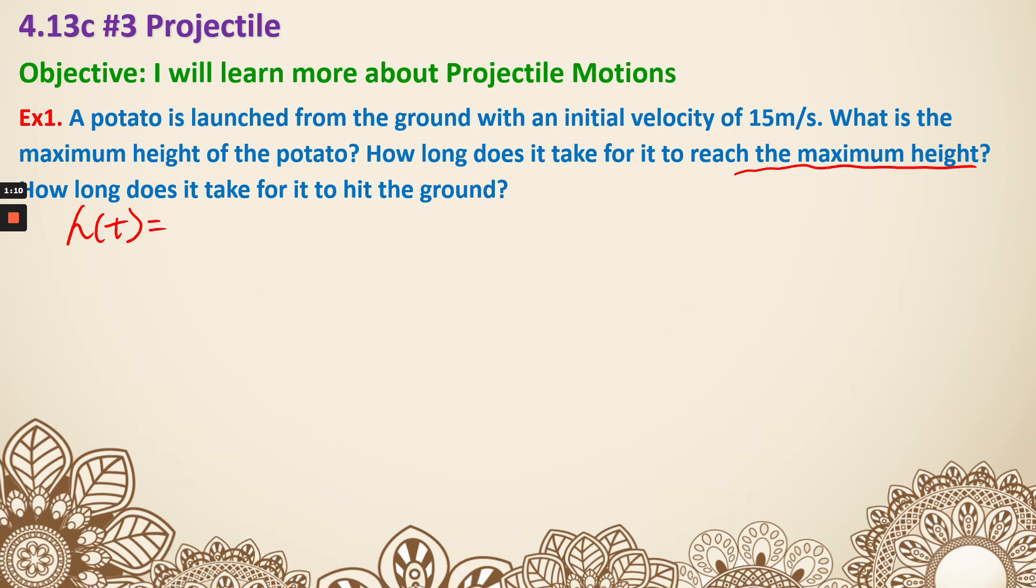Since it's about meters per second, is going to be negative 4.9 times t squared. Then it gave you an initial velocity, which is 15 plus 15t, but it says from the ground, which means we don't have the c. Now I can calculate my t first, which is negative b over 2a, so negative 15 over 2 times negative 4.9, which is basically 15 over a positive 9.8. And that after rounding is going to be 1.53 seconds.